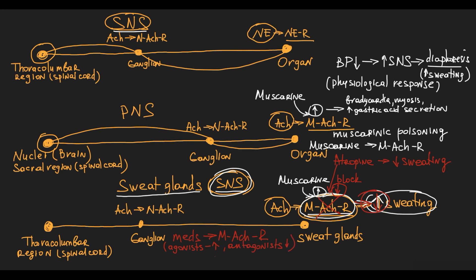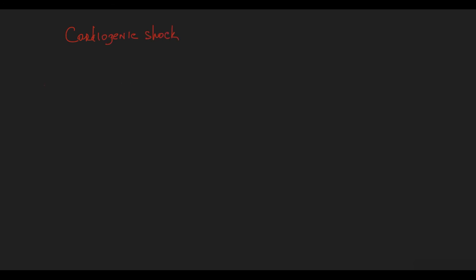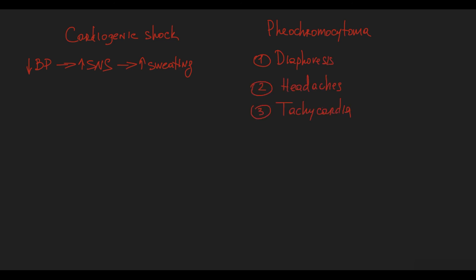In terms of physiological mechanisms, we keep in mind that sweat glands are innervated by the sympathetic nervous system, and activation of the sympathetic nervous system causes sweating. To remember this, recall that patients with cardiogenic shock experience sweating: they have low blood pressure, the sympathetic nervous system activates to raise it, and thereby sweat glands become activated. Another example is pheochromocytoma, with its classical triad of diaphoresis, headaches, and tachycardia — all caused by excessive sympathetic nervous system activity.